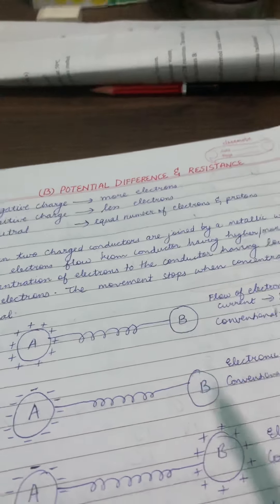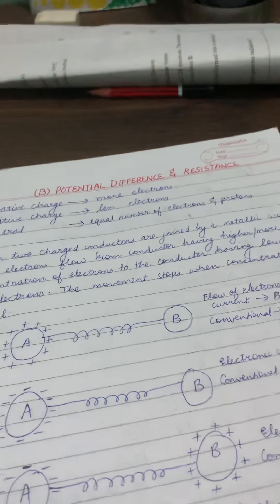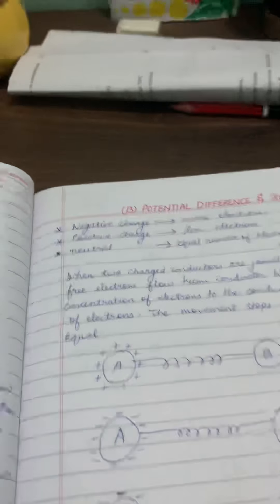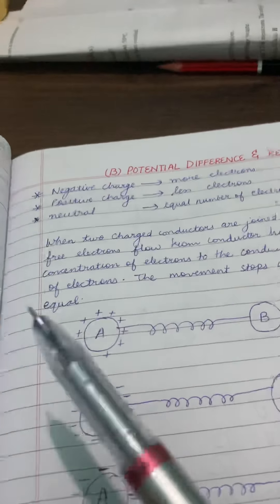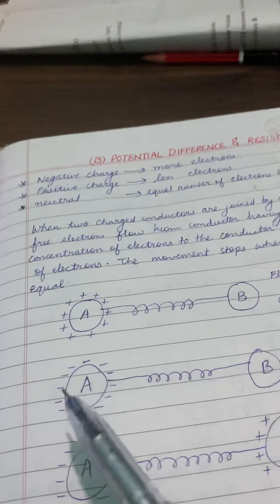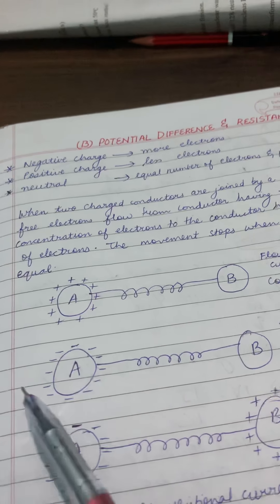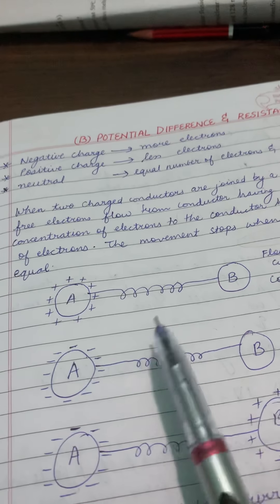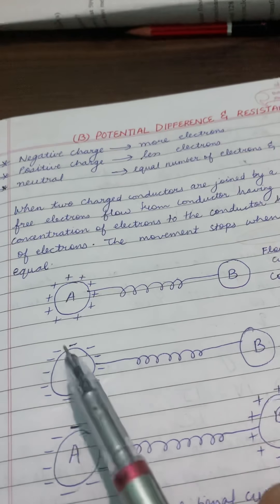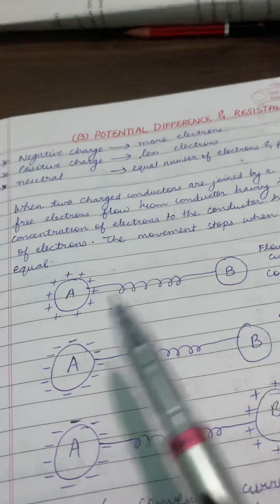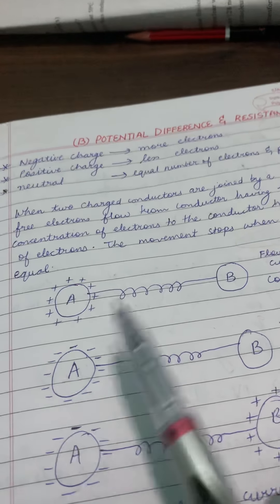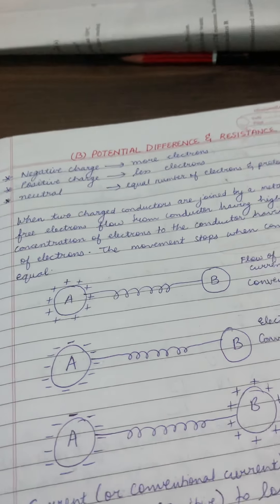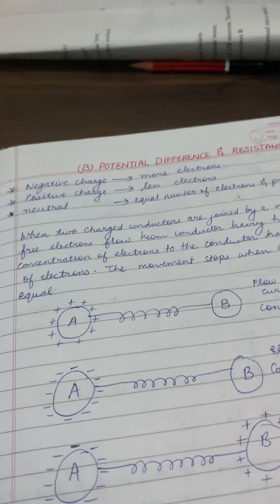But remember, this movement will stop once the concentration of electrons becomes equal on both sides. Suppose electrons have started moving from A to B — a point will come when the number of electrons in both A and B becomes the same. That is, the negative charge will become equal in both, and then the movement of electrons will stop.